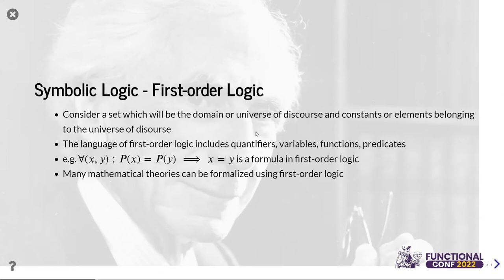Now let's look at first-order logic. First-order logic goes beyond propositional logic by considering a universal discourse — a set whose constants are its elements, which can be numbers, playing cards, anything. The language includes quantifiers, variables bound by quantifiers, functions, and predicates. A simple example: 'for all x, y: P(x) and P(y) implies x equals y.' Many mathematical theories can be formalized using first-order logic.